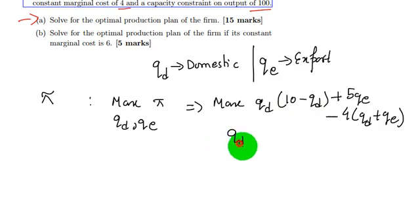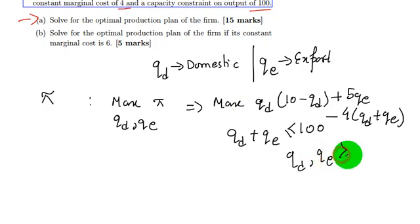Subject to the constraint that qd + qe ≤ 100, and qd, qe ≥ 0.